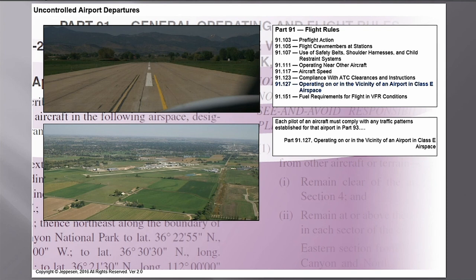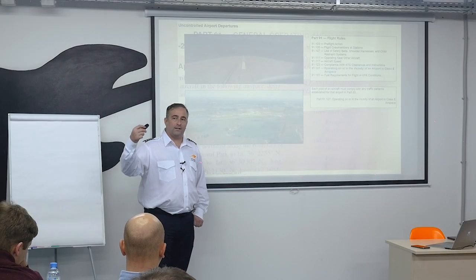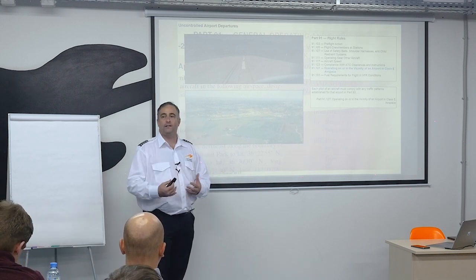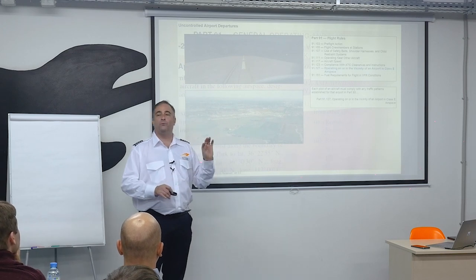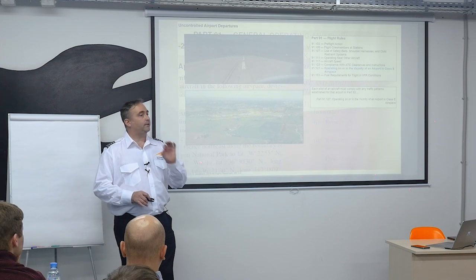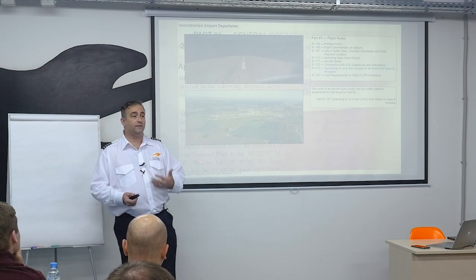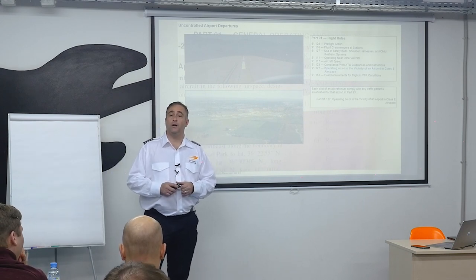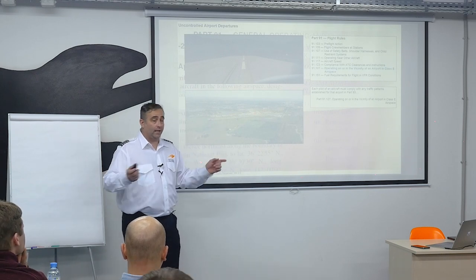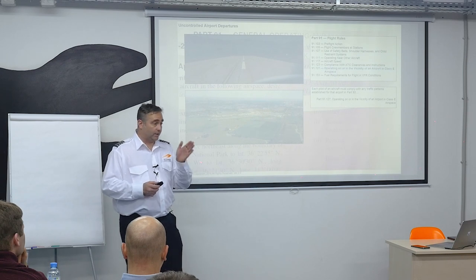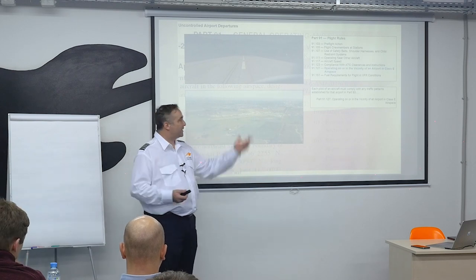Vicinity of an airport in Class Echo airspace — non-towered rules: each pilot must comply with the traffic patterns for that airport as specified in Part 93. Advisory Circular 90-66B spells this out in great detail in plain, clear English with very little room for interpretation. You need to know if it's left or right traffic and how to join the pattern. You cannot just go straight in and land because a runway looks clear — you must comply with the traffic patterns.